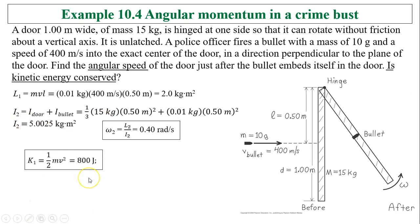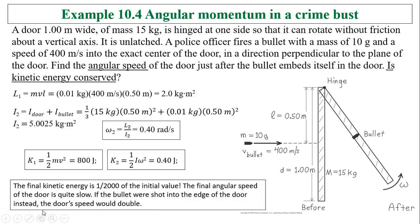Now let's check the kinetic energy. So I said kinetic energy cannot be conserved because collision is completely inelastic. The bullet's kinetic energy is 800 joules. After, the kinetic energy of the two rotating together equals one half I omega squared. I, in this case, is 5.0025 and omega is 0.4. So that gives you 0.4 joules. So the final kinetic energy is one two-thousandth of the initial value. The final angular speed of the door is quite slow. If the bullet was shot into the edge of the door instead, the door's speed would double. That is because its angular momentum would double. So L1 is double. Therefore, L2 has to be double. That's why omega would have to double.